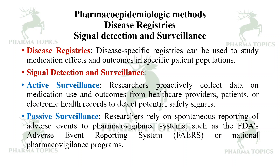Passive surveillance involves researchers relying on the spontaneous reporting of adverse events to pharmacovigilance systems such as FDA's Adverse Event Reporting System (FAERS), or in India, the Pharmacovigilance Programme of India, which is the national pharmacovigilance program.